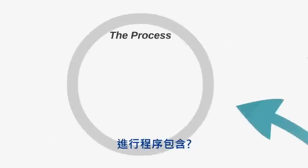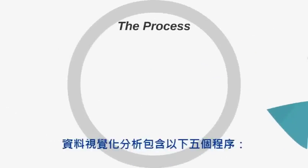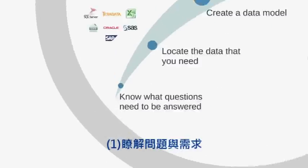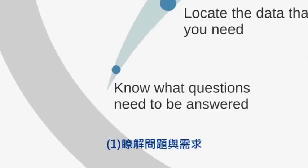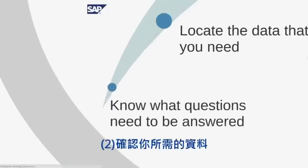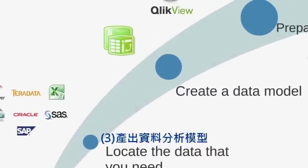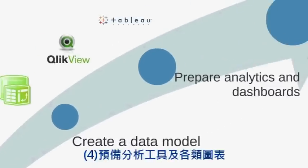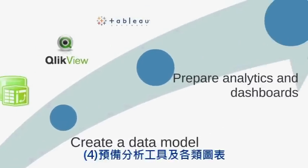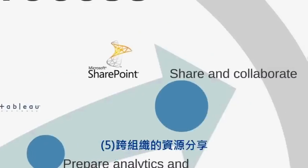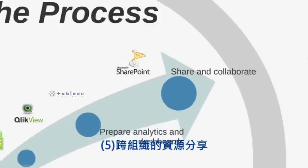What is the process? Visual Analytics is a five-step process: know what questions need to be answered; locate the data that you need; create a data model; prepare analytics and dashboards; and share and collaborate across the organization.